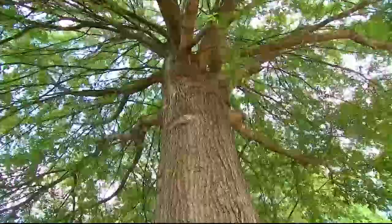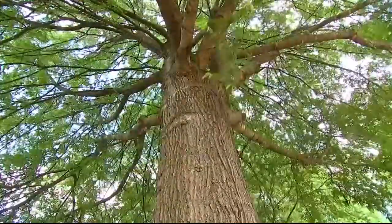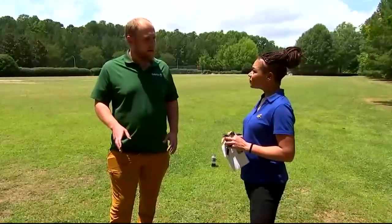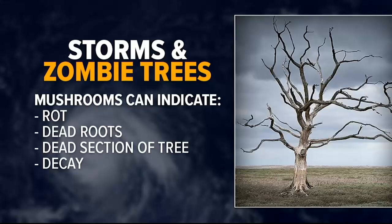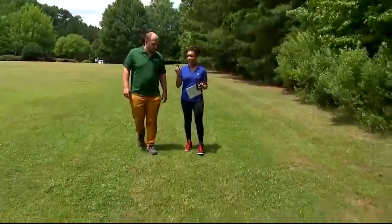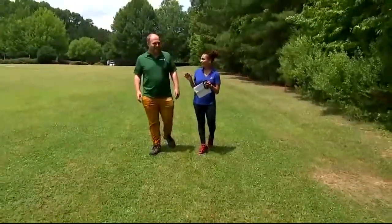Zombie trees can develop from things that happen as a result of a storm — damage from high winds and rain. There are also things within a tree that make it more likely to break. Mushrooms are a good indicator, whether around the tree or on the tree itself — it's an indication of rot. It could mean those are dead roots or a dead section of the tree that's been invaded by a fungus and further decayed and weakened because of it.